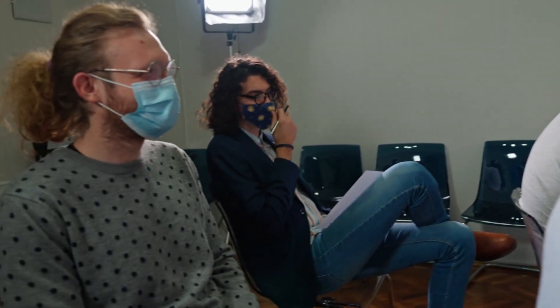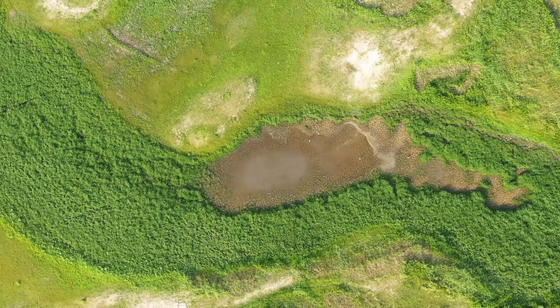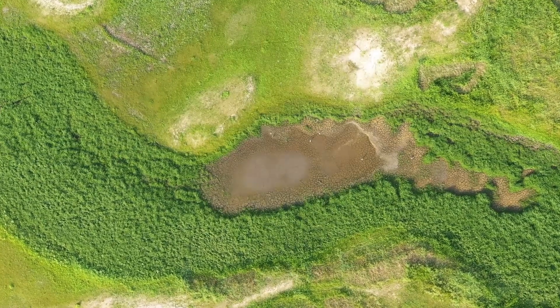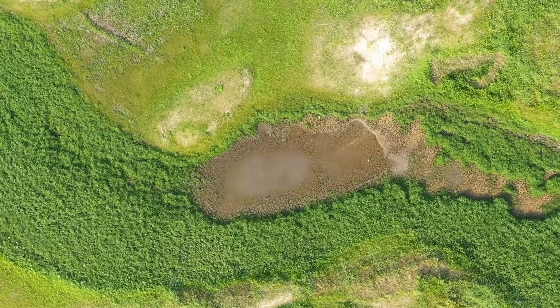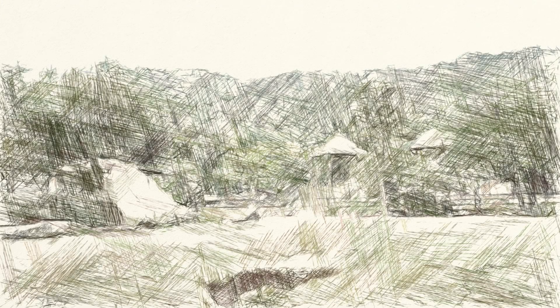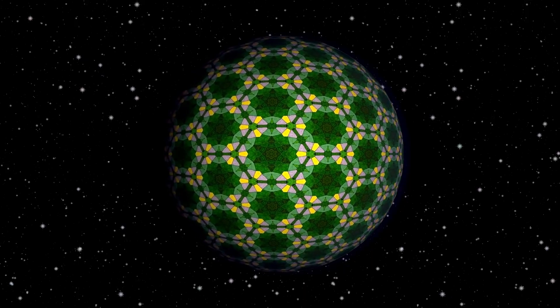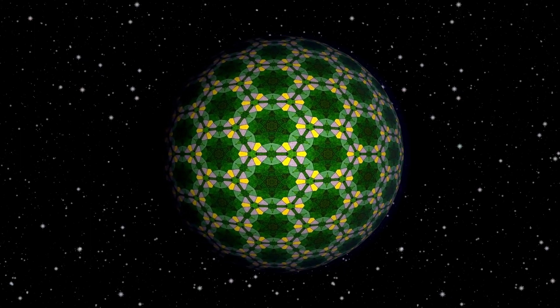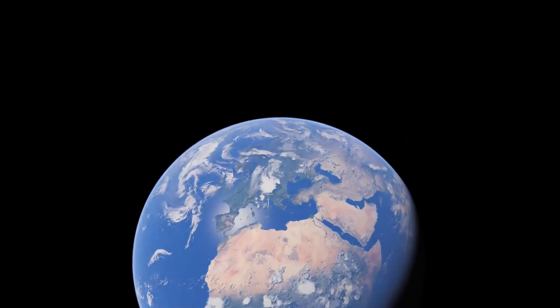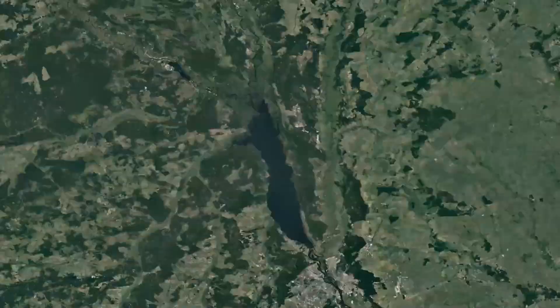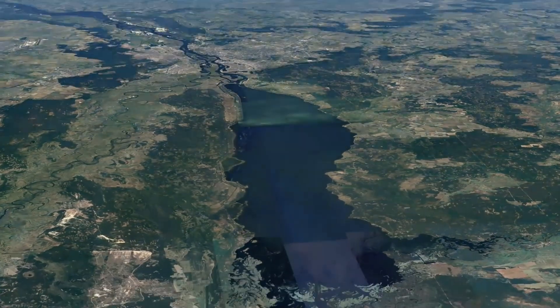The realization sent ripples through the scientific community because it suggested intent. Something had placed these objects here. Something had given them impossible energy cores, and something was directing their path. As images spread online, ordinary people ask the obvious question, why hadn't we been told? Why did it take an amateur astronomer with a hillside telescope to expose what the world's most advanced observatories had missed?